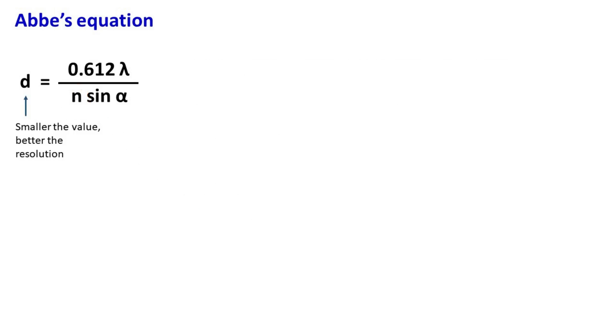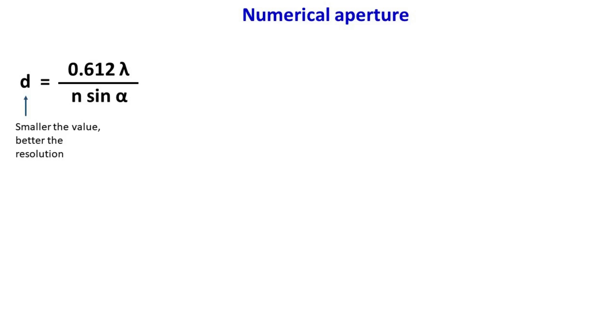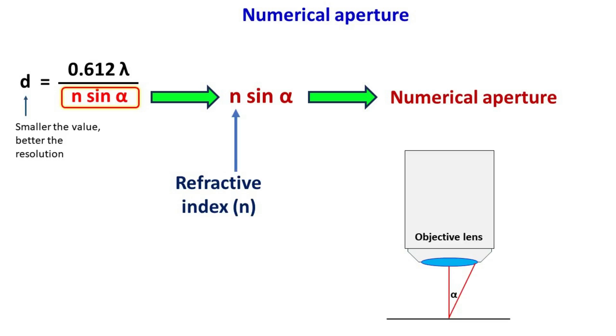In this equation, alpha is the aperture angle. The value of aperture angle alpha increases as the objective lens moves closer to the sample. Numerical aperture: in this equation, the product in the denominator n sin alpha is termed as numerical aperture. It can be defined as the product of refractive index and the light-gathering ability of the objective lens.